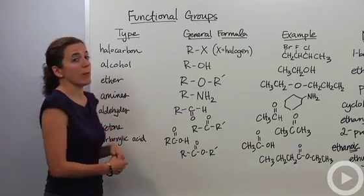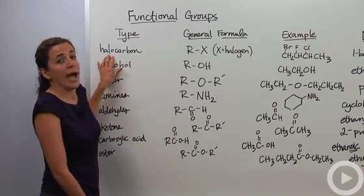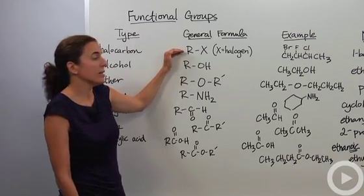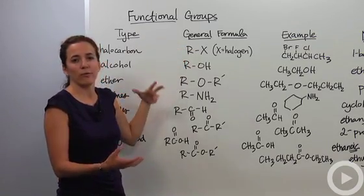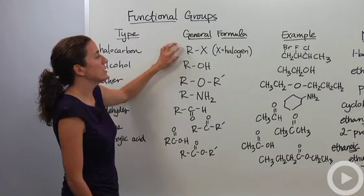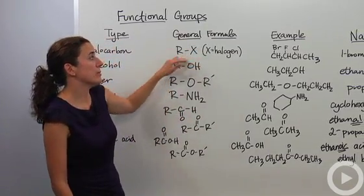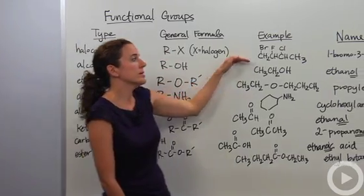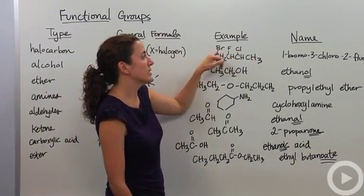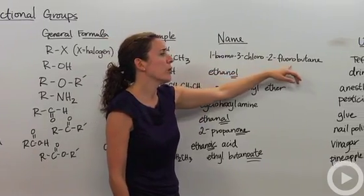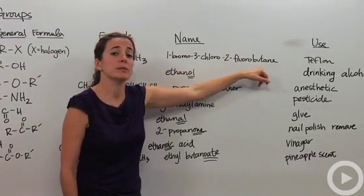The first one being a halocarbon, halo reminding us of halogens. Whenever I write R, that means I'm dealing with a backbone of carbon. If we have our parent group R bonded to a halogen, that is the general formula. Here's an example, we have the halogens up here. We're going to name this 1-bromo-3-chloro-2-fluorobutane, butane being four carbons in its backbone.